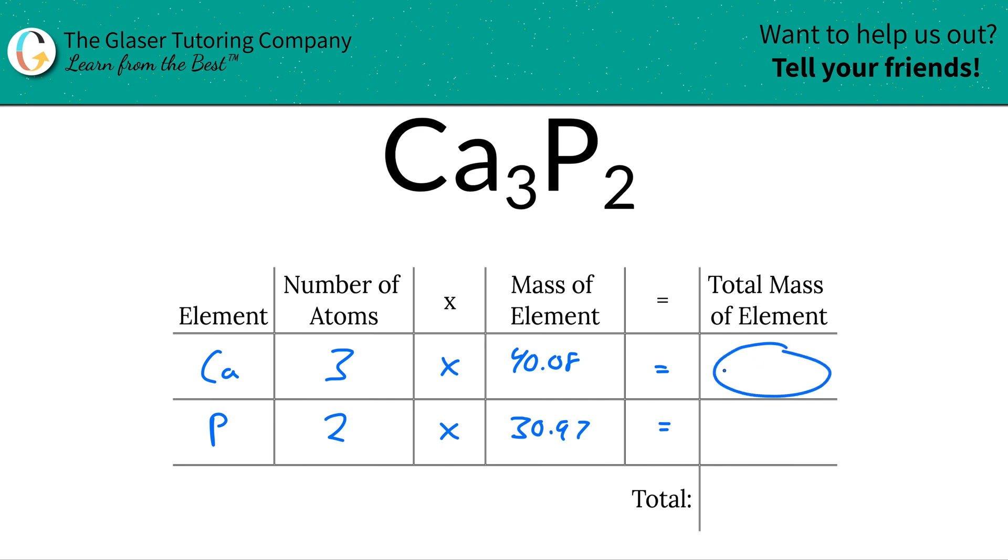Then the total mass of the element. Now we're going to simply multiply this row across. So 40.08 times three is going to work out to be about 120.24. And then here, 30.97 times two should work out to be about 61.94. And then to find the total mass of the entire compound, literally just add this column together, add up all the totals of each particular element. And that should work out to be 182.18.